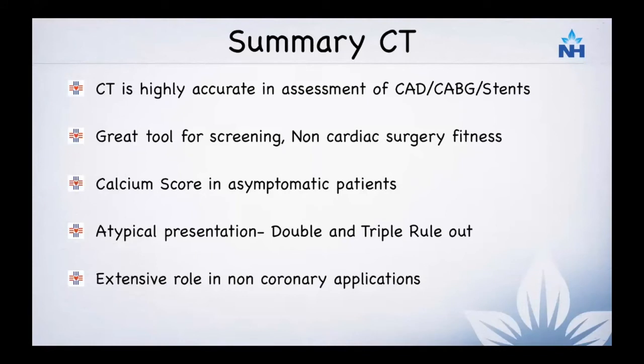In summary, CT is highly accurate in assessment of coronary artery disease, bypass grafts, and stents. It is a great tool for screening, especially for non-cardiac surgery fitness cases. Calcium score in asymptomatic patients is excellent and we should use it. For atypical presentation of chest pain, one should use double and triple rule out with CT, and there is an extensive role in non-coronary applications looking at the aorta and other blood vessels.